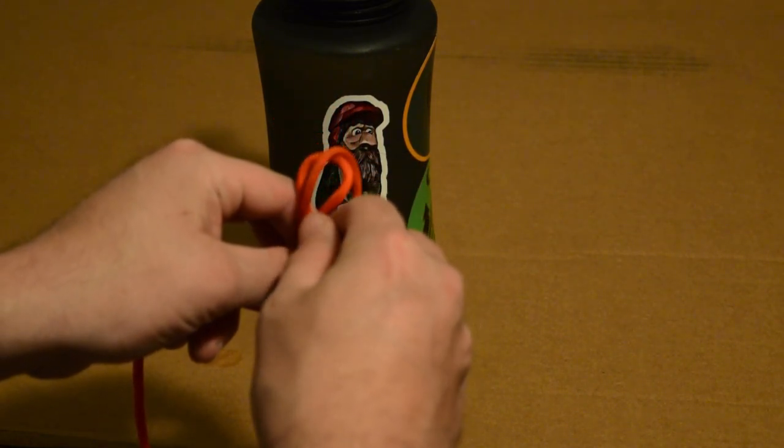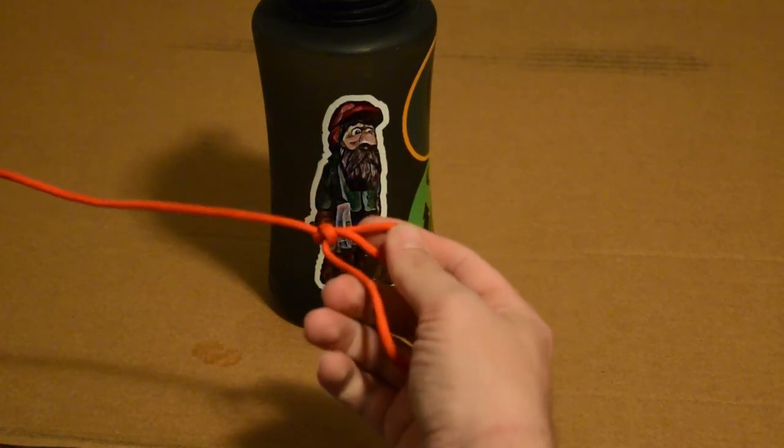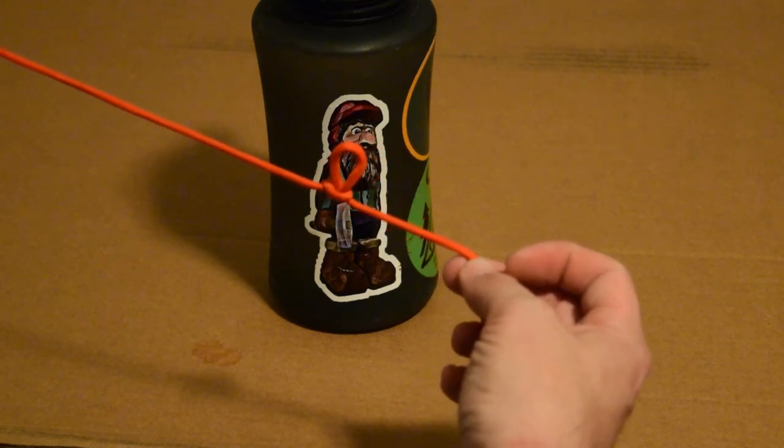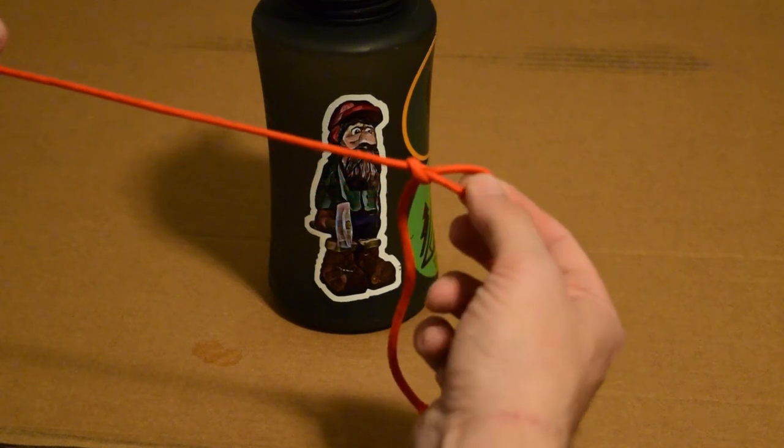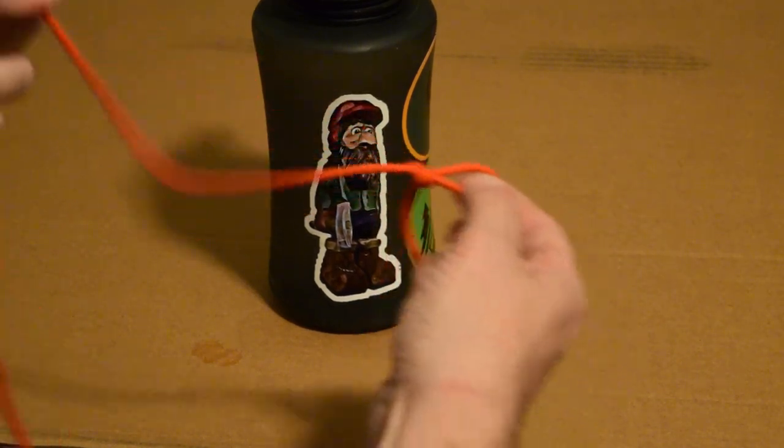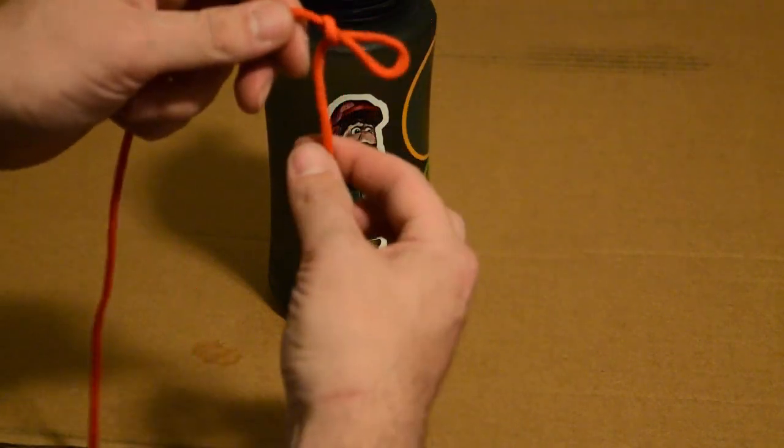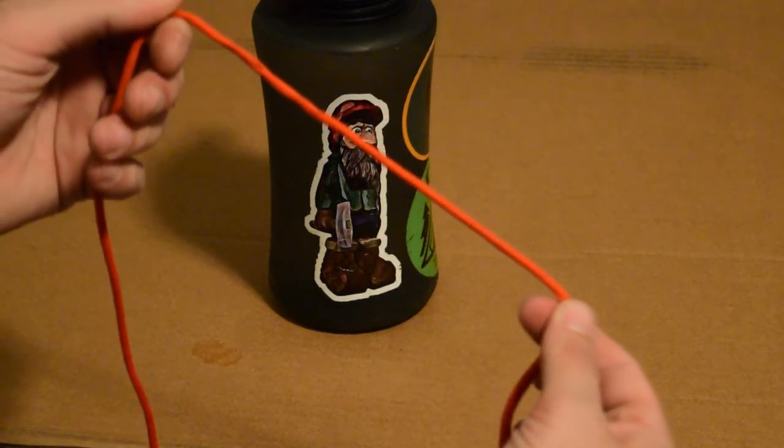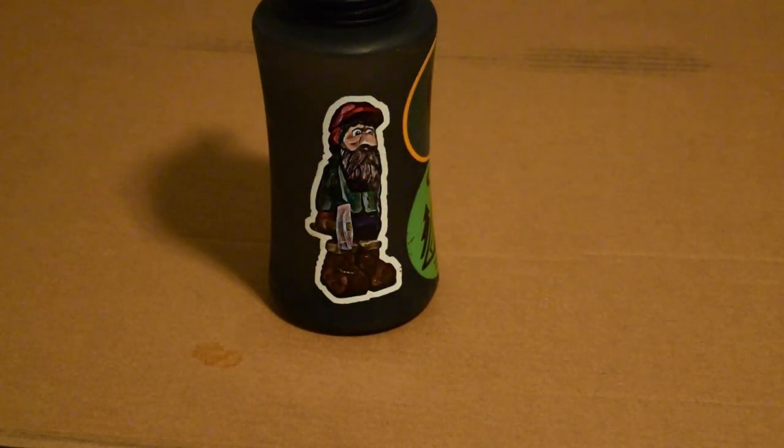And then all we're going to do is put that second loop through the first loop. Now we're going to pull this tight, and there you go, we have our clover hitch. And if you have something attached to that, you can yank on it, it's not going to go anywhere. And then to get this knot out, simply pull on this, and there you go, no more knot.